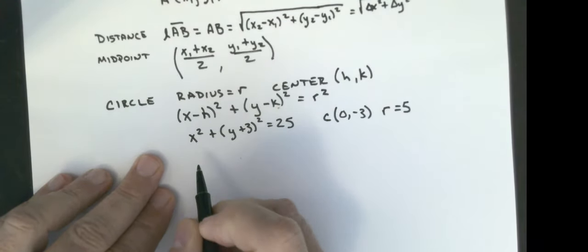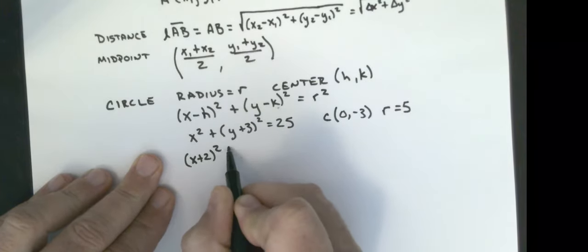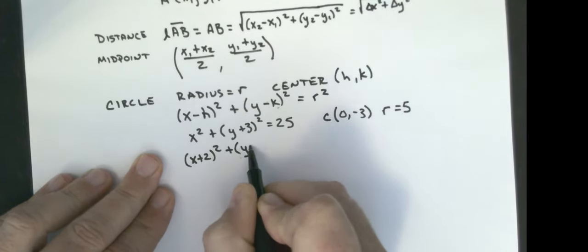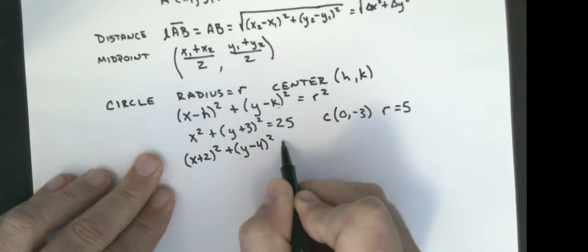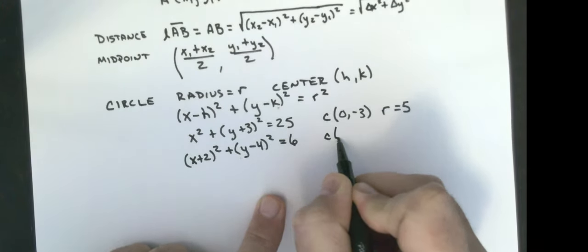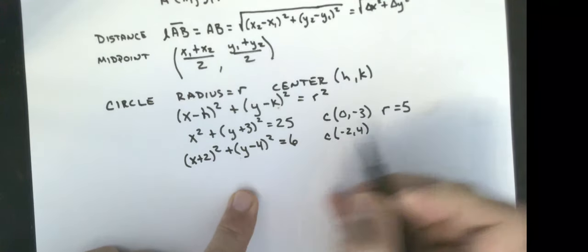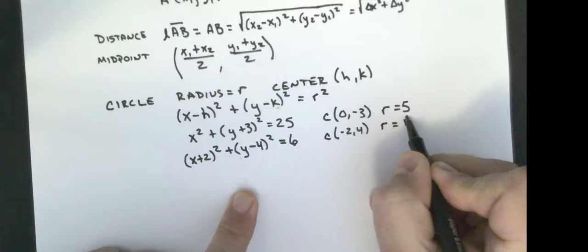If I did x plus 2 squared plus y minus 4 squared equals 6, the center is at negative 2, comma 4, and the radius is the square root of 6.